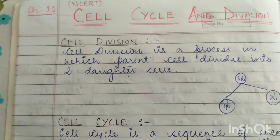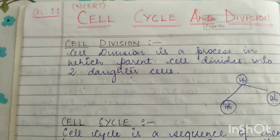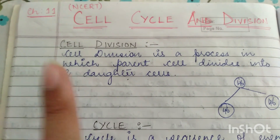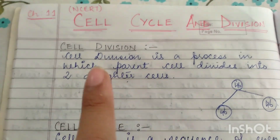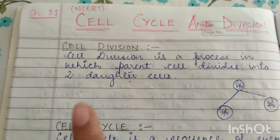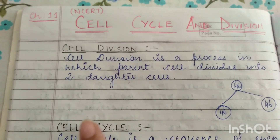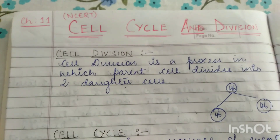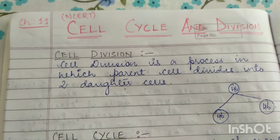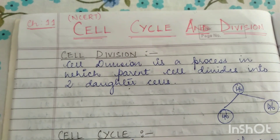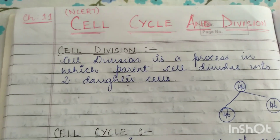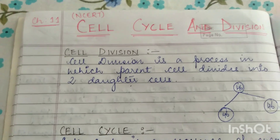Cell division is a process in which a parent cell divides into two daughter cells. The information of the parent cell is distributed into the two daughter cells. Cell division is of three types: mitosis, amitosis, and meiosis. Mitosis is also known as indirect division, amitosis as direct division, and meiosis as reductional division. Mitosis is also known as equational division because the number of chromosomes in the daughter cells remains the same as that of the parent cell. In case of meiosis, it is called reductional division because the number of chromosomes gets reduced to half in the daughter cells.